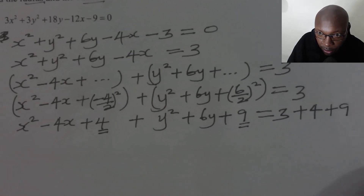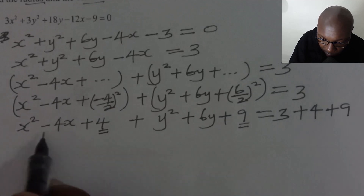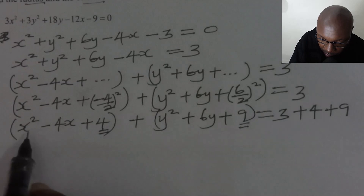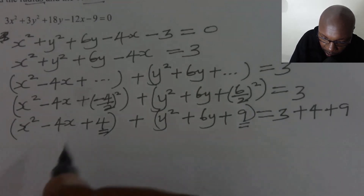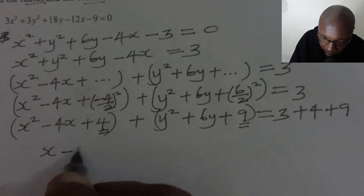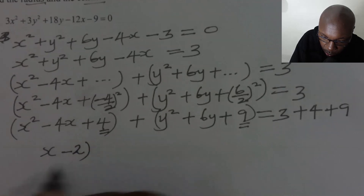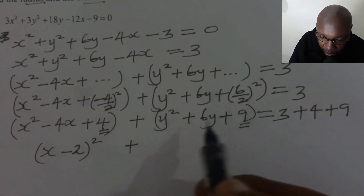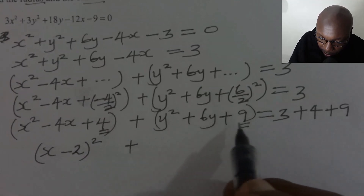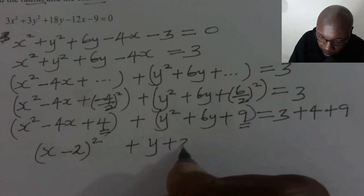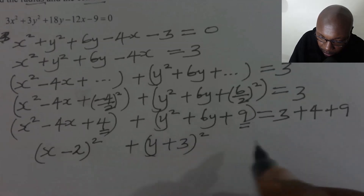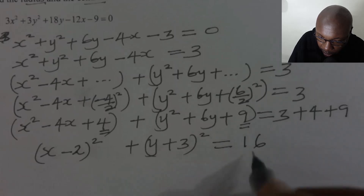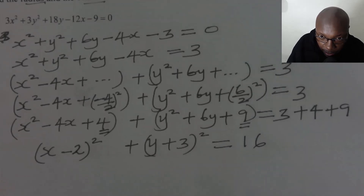So now you can see what you're having — we have the complete square. We can factorize these. If we factorize x squared minus 4x plus 4, we get x minus 2 squared. Then for y squared plus 6y plus 9, we get y plus 3 squared, equal to — add these — 3 plus 4 plus 9, which gives 16.